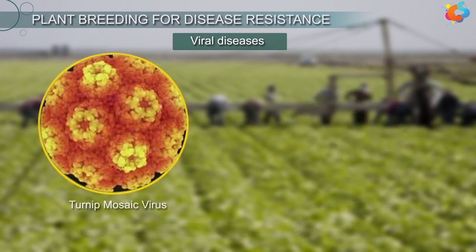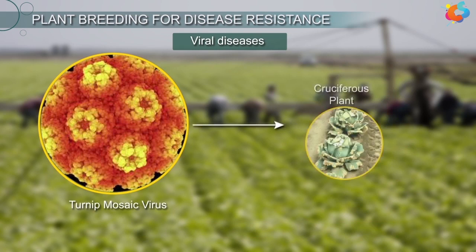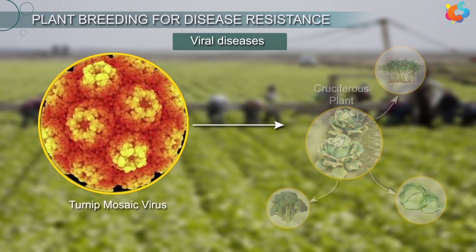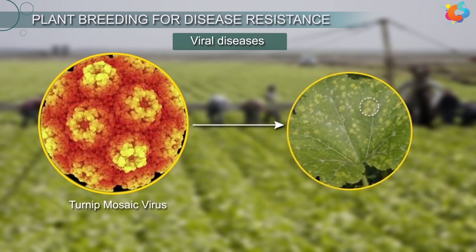Another virus called turnip mosaic virus causes a disease called turnip mosaic in cruciferous plants. This disease forms pale-coloured ulcers on the leaves which stunts the growth of the plant.